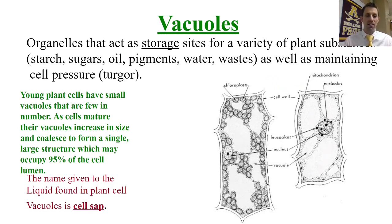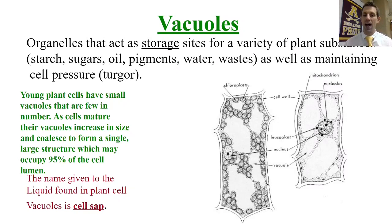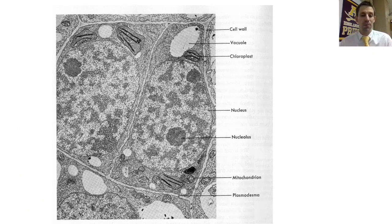Next are vacuoles. Many cells have vacuoles, but plant vacuoles are unique because they can get very large. Since plants don't move around and need an ample water supply for photosynthesis, they store large amounts of water in their vacuoles. A wilted leaf looks that way because its vacuoles have lost so much water that the cells appear shriveled. This internal water pressure is called turgor pressure, and the contents inside the vacuole are called cell sap. In some plant cells, the vacuole can take up to 95 percent of the cell's total volume.